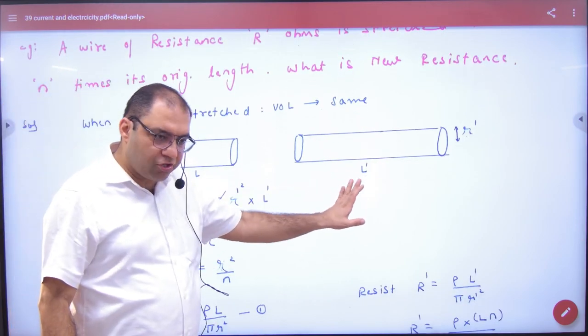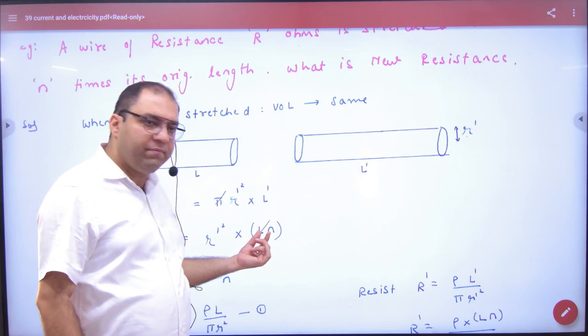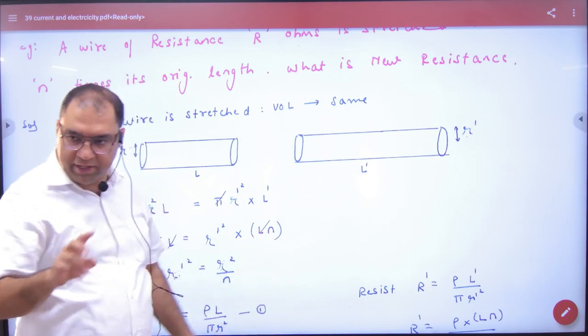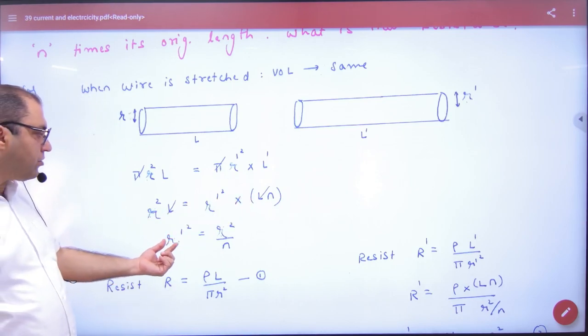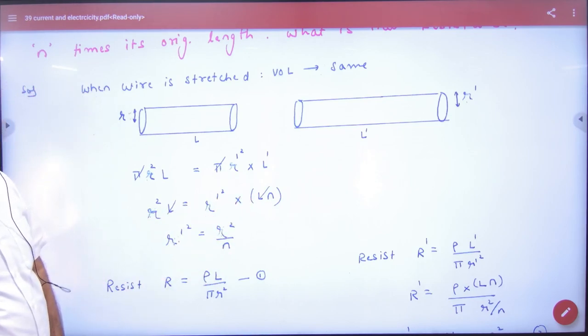Next. The length L' is n times L according to question. Length is n times. So L from L cancel. R'² = R²/n will go. In this case, the radius relation has come.